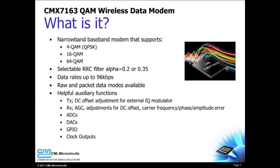The CMX7163 is a narrowband wireless data modem that supports spectrally efficient QAM modulation. 4QAM, 16QAM, and 64QAM are all supported by this single device.